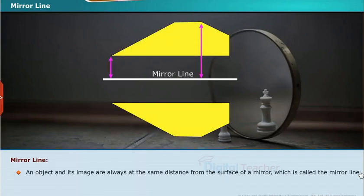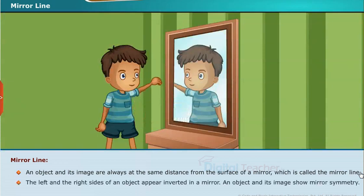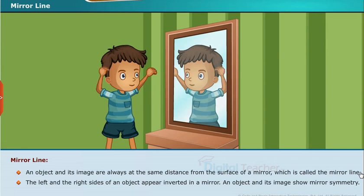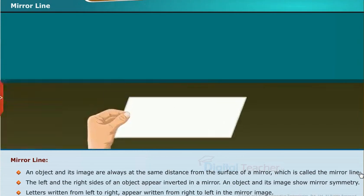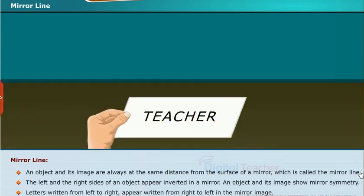An object and its image are always at the same distance from the surface of a mirror, which is called the mirror line. The left and the right sides of an object appear inverted in a mirror. An object and its image show mirror symmetry.